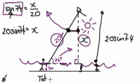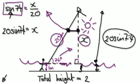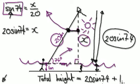So total height equals, well, get this length here. Remember this is just from here to here. So it would be 20 sine 74 and then plus 1. So that would be your answer.